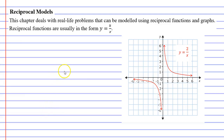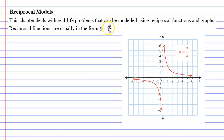This chapter deals with reciprocal models. We use reciprocal functions and graphs to model real-life problems. Reciprocal functions are usually in the form y equals k over x. In previous videos, I was saying it was y equals a over x. It doesn't really matter whether it's k or a — either way, the letter at the top is there to represent a number. Usually when we talk about reciprocal functions, we use the letter k most often, so from now on we'll use k.